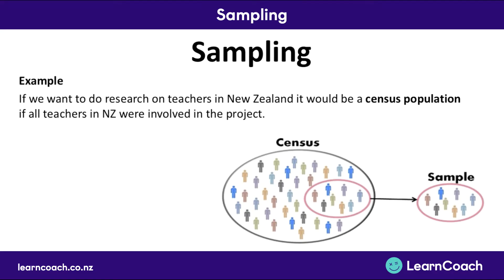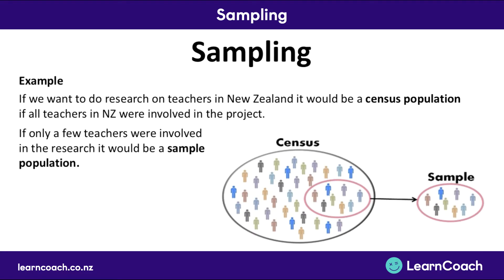For example, if we wanted to do research on teachers in New Zealand, it would be a census if all the teachers in New Zealand were involved in the project. However, if only a few teachers were involved in the research, it would be a sample population.